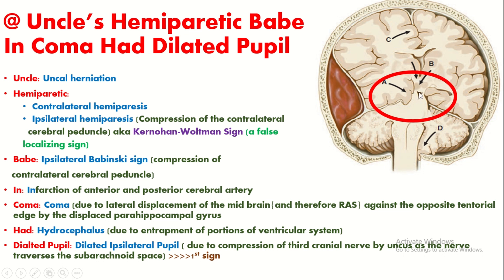Due to entrapment of various portions of the ventricular system by the herniation, hydrocephalus can also present. When the uncus herniates through the tentorial foramen, it compresses the third cranial nerve against the soft arachnoid space, leading to ipsilateral dilatation of the pupil. This is a very important sign of uncal herniation. I hope you are benefited by this video — thank you so much for watching.